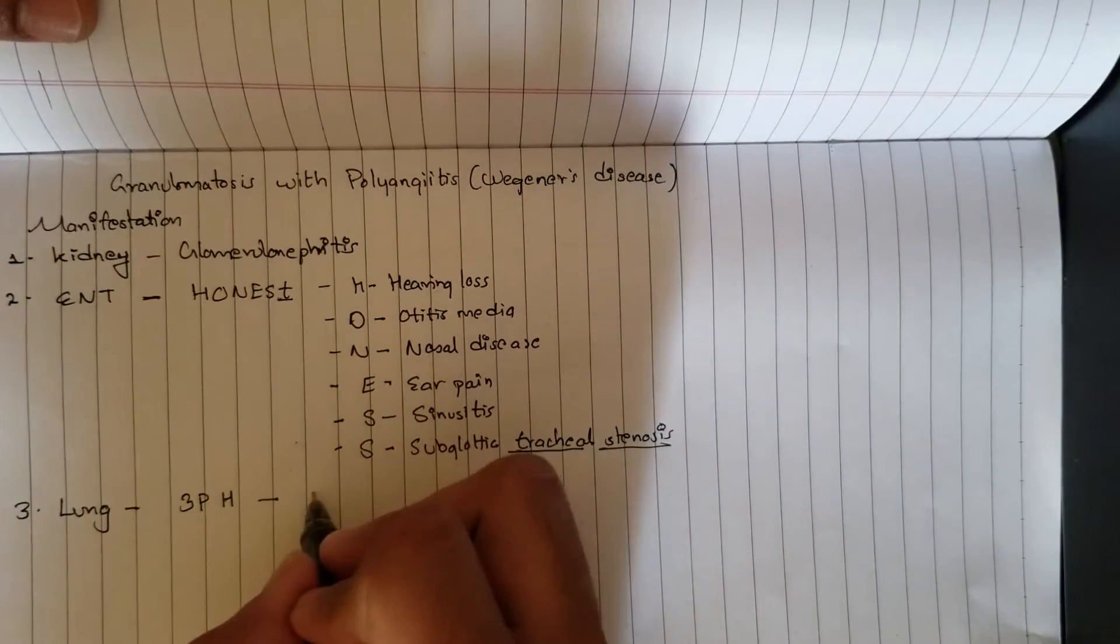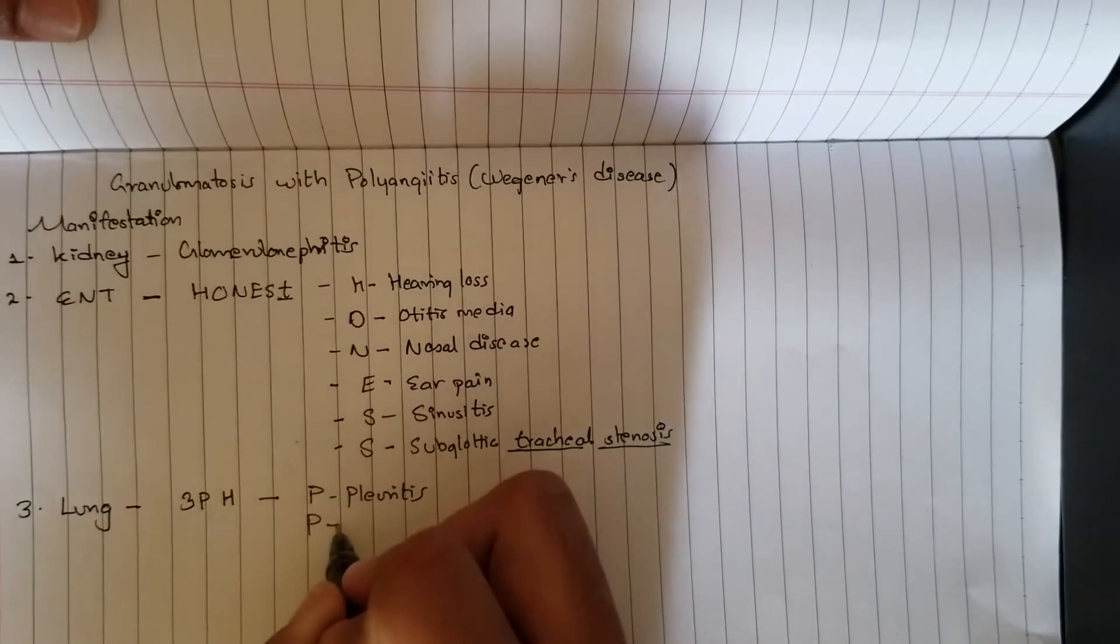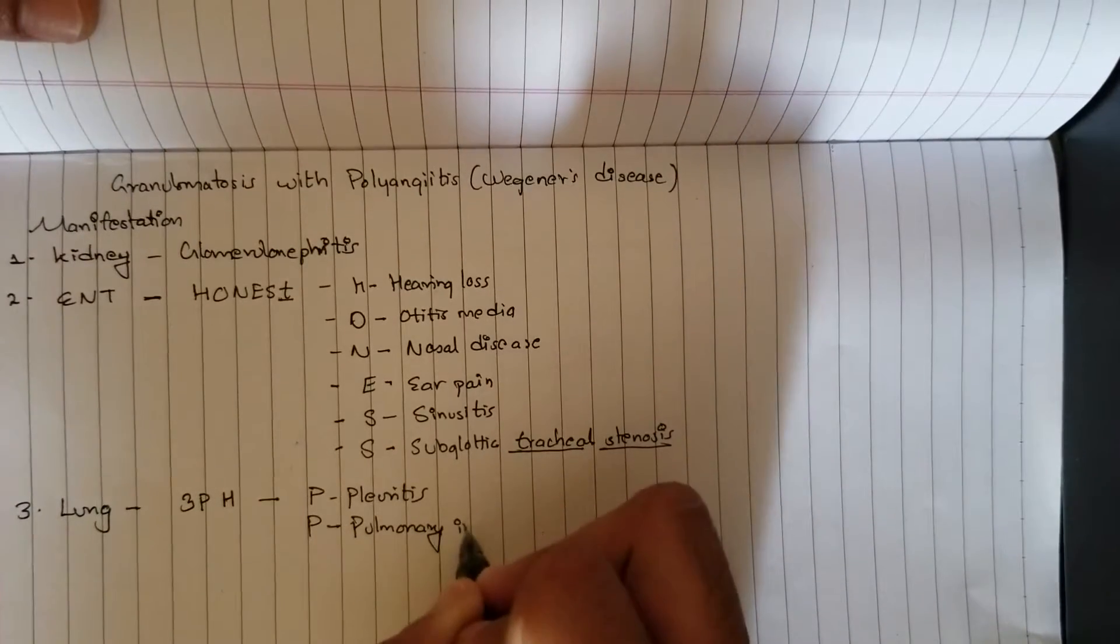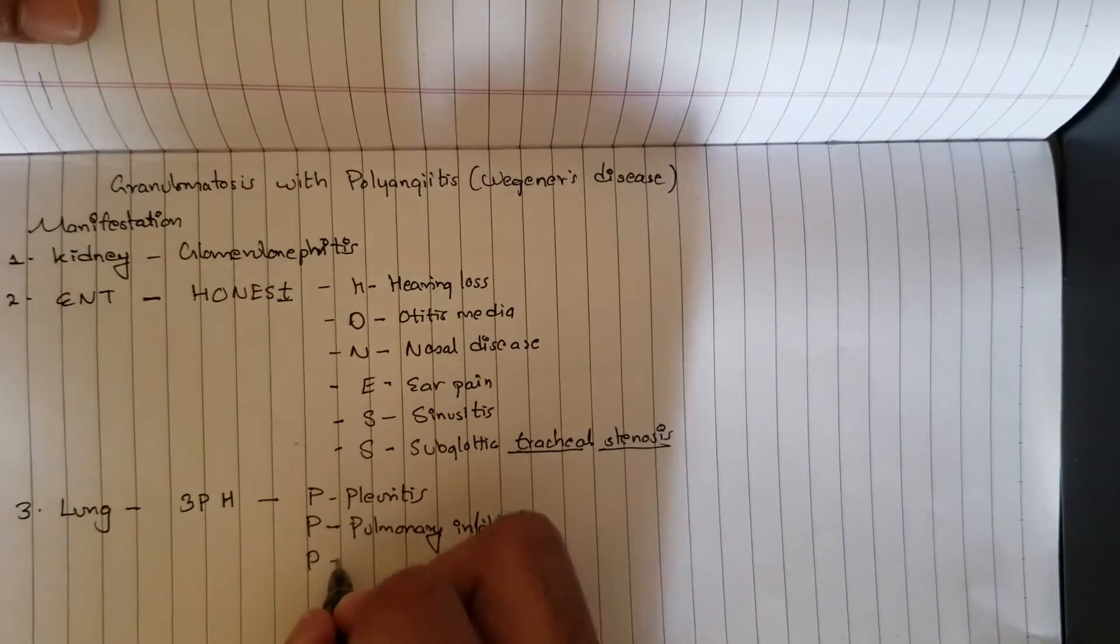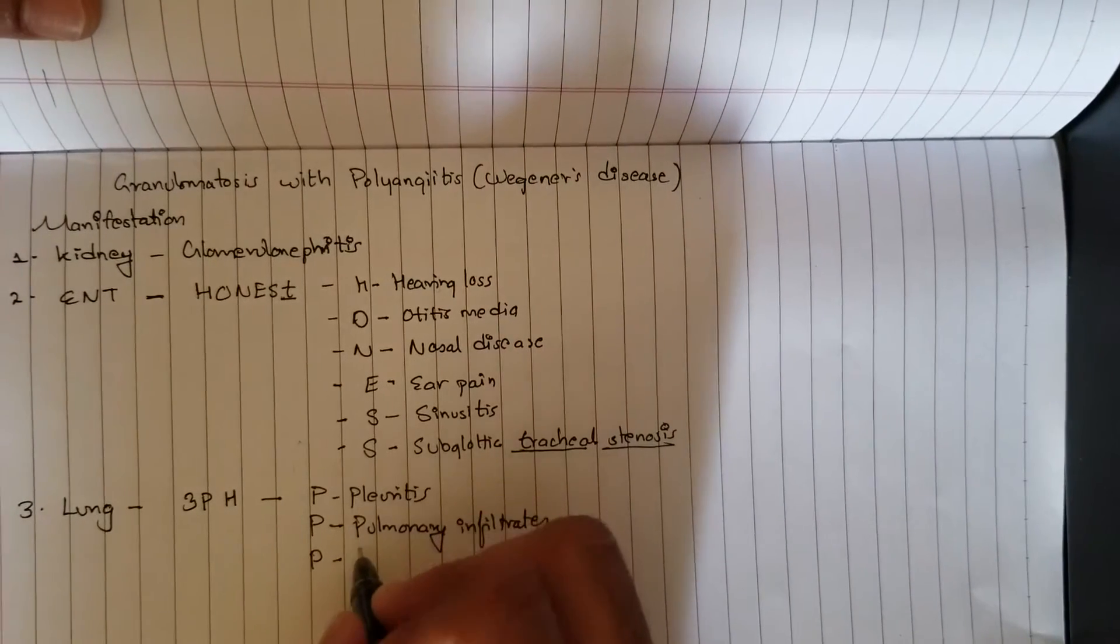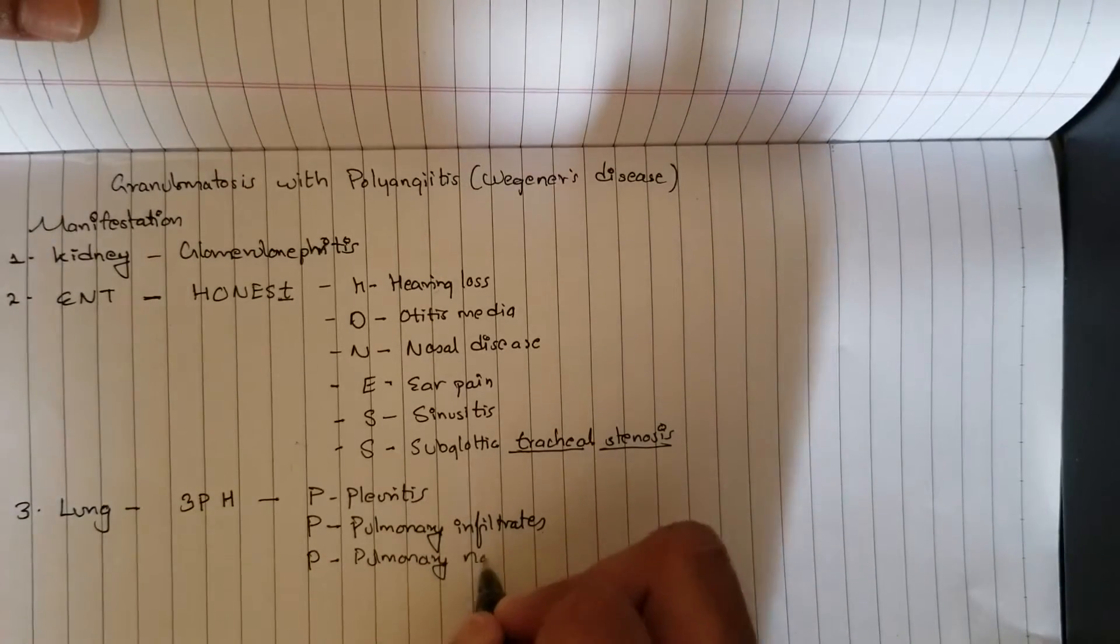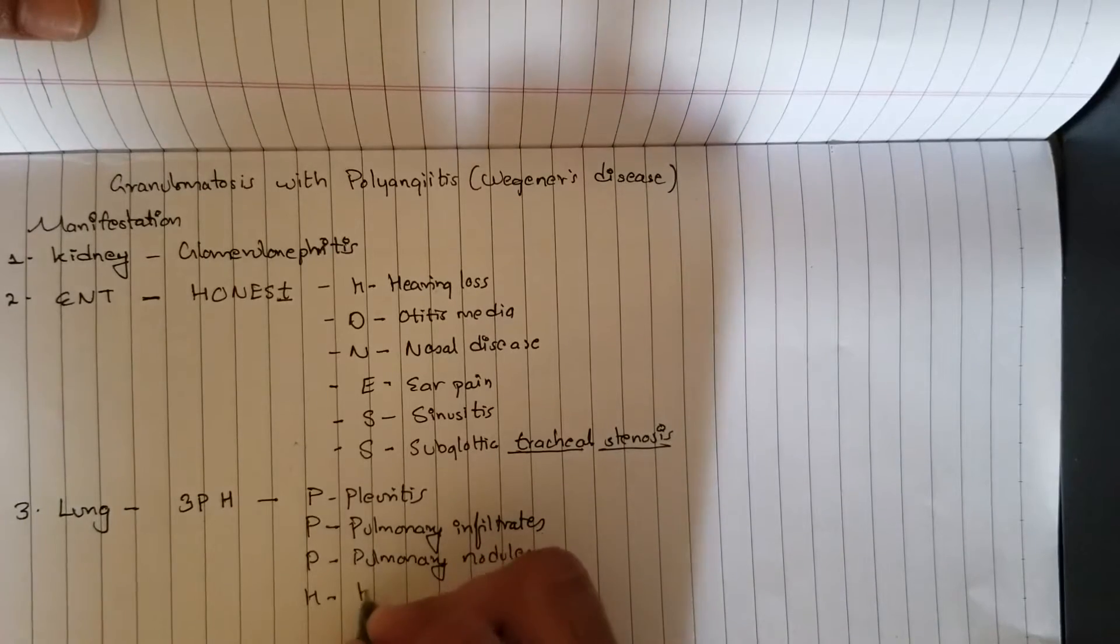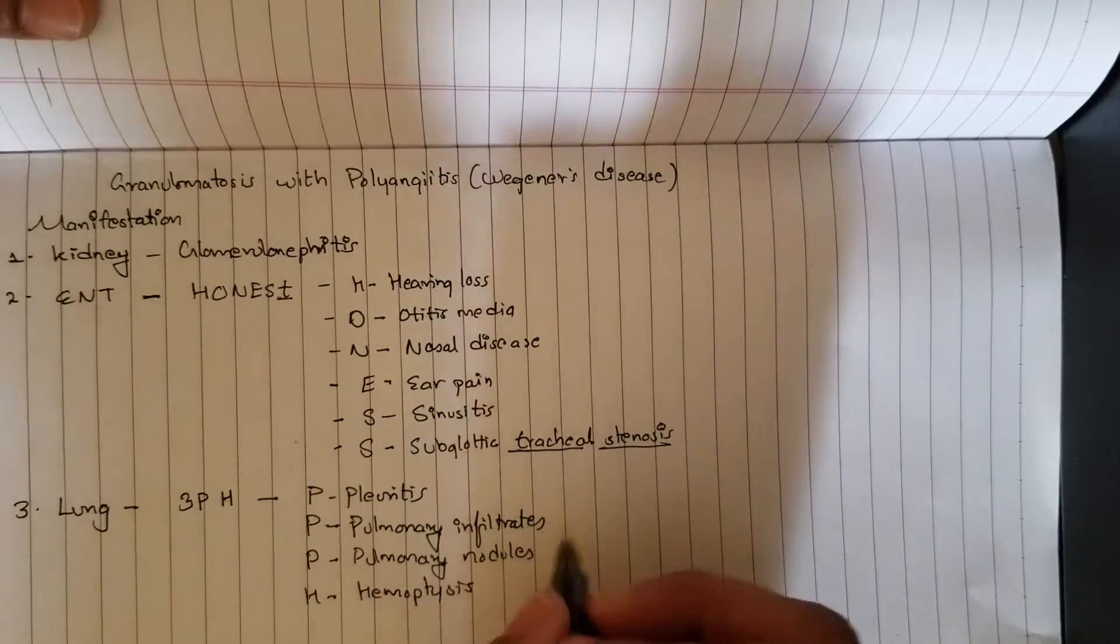It's very simple, that's 3PH. Just remember 3PH. First P for pleuritis, another P for pulmonary infiltrates, another P for pulmonary nodules, and H for hemoptysis. And then to the eyes.